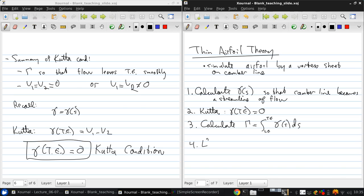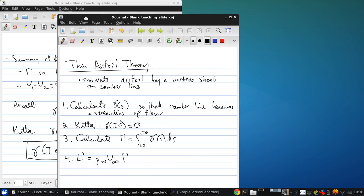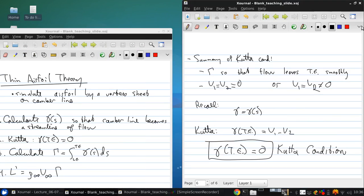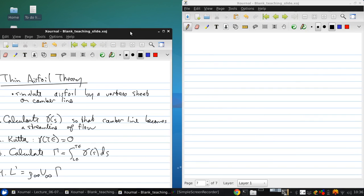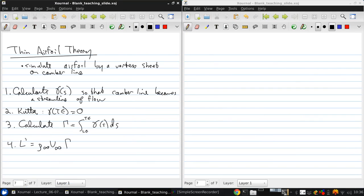And then finally, we can get the lift per unit span is rho infinity v infinity gamma. So these are the steps, but there's still a lot of unanswered questions about how we actually do this.